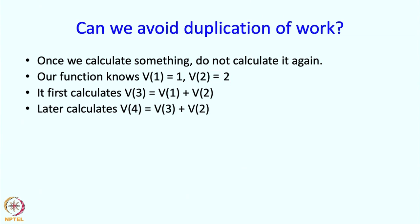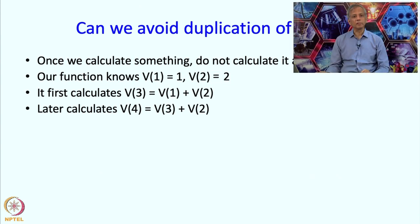It then calculates V3, and V3 is calculated using V2 plus V1. After that you can calculate V4 as V3 plus V2. But notice that when we issue this call V4, we do not really need to recalculate V3. If we could somehow remember that we calculated V3 earlier, then we could just use that value, and V2 of course we know.